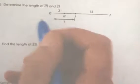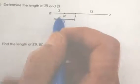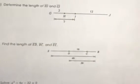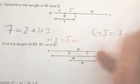On the next one, determine the length of segment HI and segment GJ. So GI, which is 7, equals 2 plus HI. That means segment HI equals 5 units. So now if this is 5, determine the length of GJ. From G to J is 7 plus 12, which is 19 units.